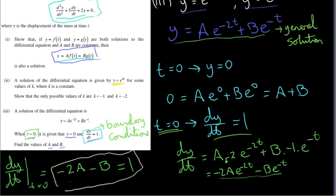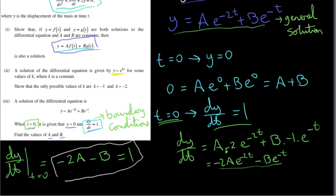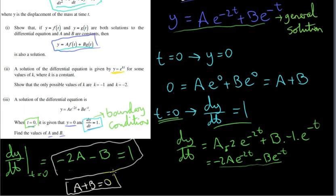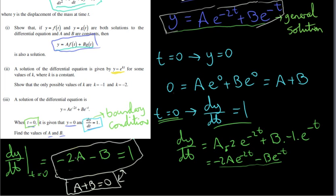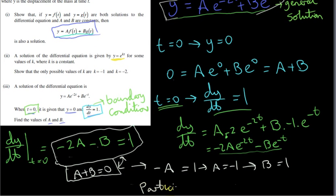So we now have two simultaneous equations: -2a - b = 1 and a + b = 0. If we simply add them together: -2a + a = -a, and -b + b = 0, giving -a = 1, so a = -1. And if a = -1, then from -1 + b = 0, we get b = 1.